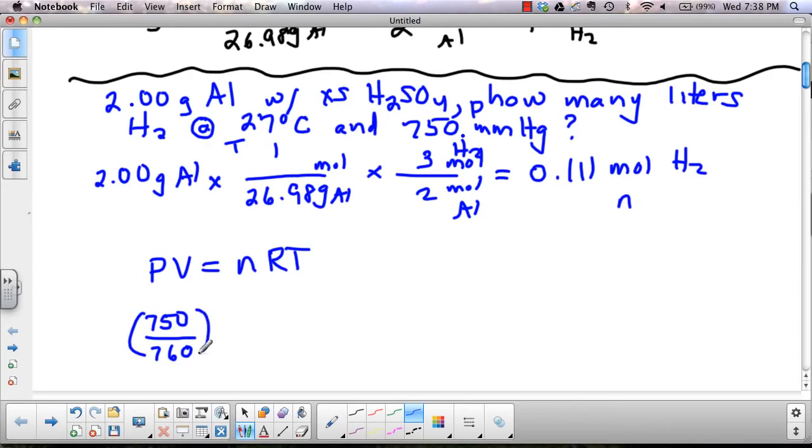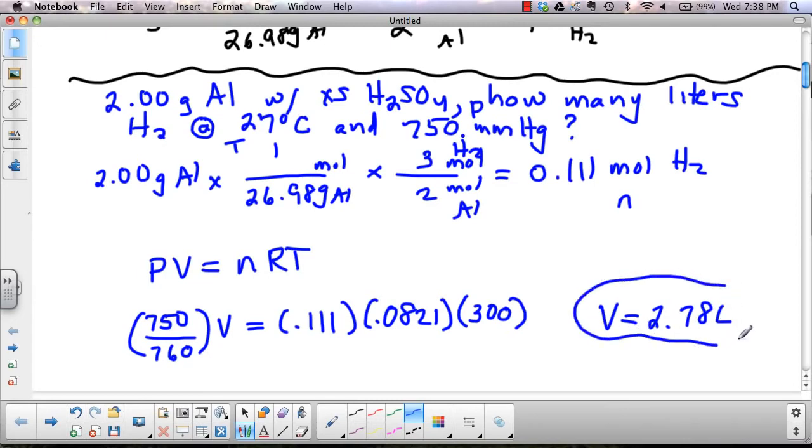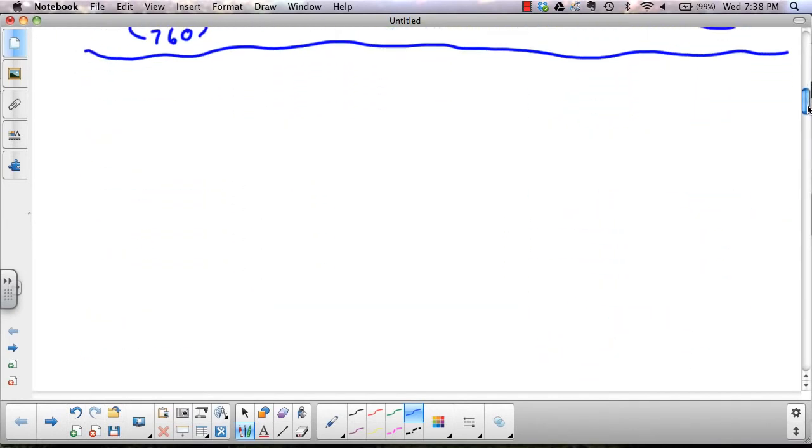Here's your moles of hydrogen, good old trusty R. And your temperature, which is 27 plus 273 is 300. If you do this out, your volume is 2.78 liters. So now you've done some real stoichiometry using gases, not at STP. Let's try a couple more so you can see the different kinds that you might run into.